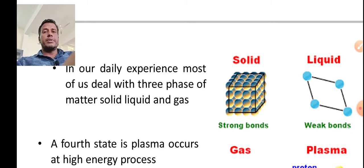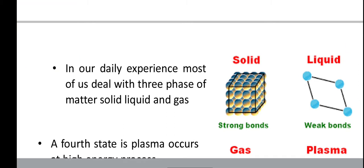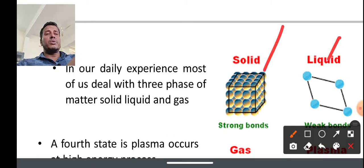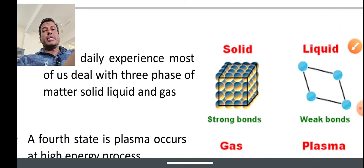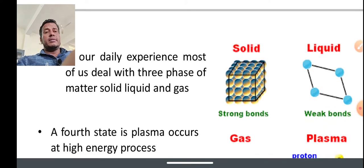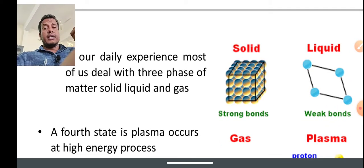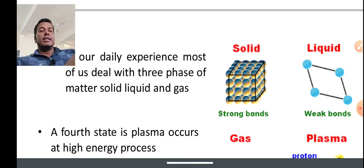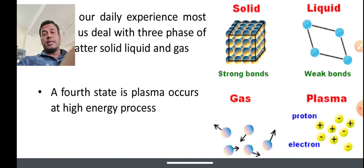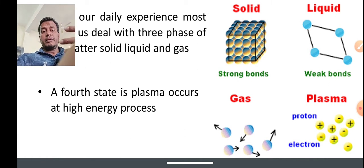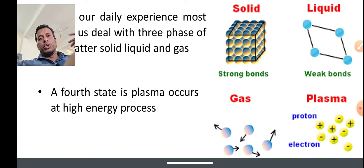Solids have strong bonds. Liquids have molecules slightly apart, and in gas, molecules are completely free. But even though, there is a fourth state of matter also present, which is called plasma, which is available at high energy processes. At high energy temperature, we get the state of plasma.